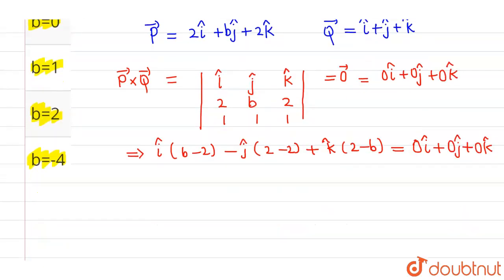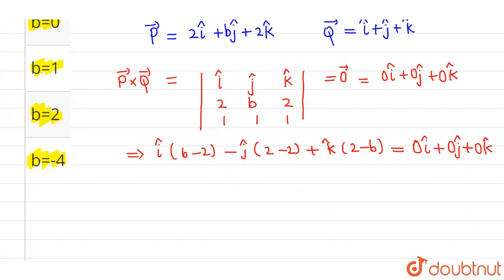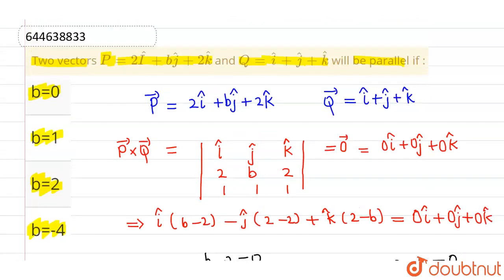Now I can say that after comparing the corresponding components, b minus 2 equals 0 by the i component, and by k component 2 minus b equals 0. From both cases I'm getting b equals 2 as the solution. So for b equals 2, both vectors are parallel. The correct option is option 3 and all other options are incorrect. I hope you understood.